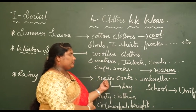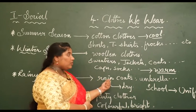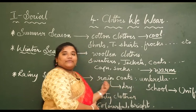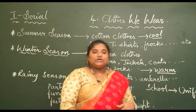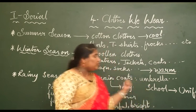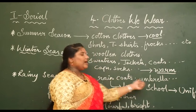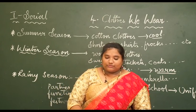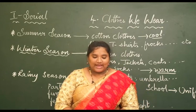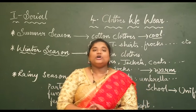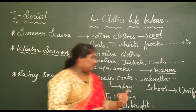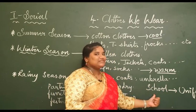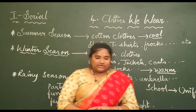We use a blank when it rains — what do we use? We use a raincoat and an umbrella. Here raincoat is not given as an option, so the answer is umbrella. The clothes we wear at school are called a uniform. Very good.